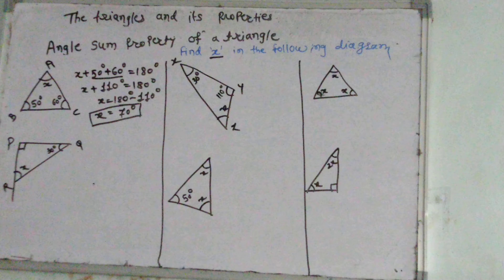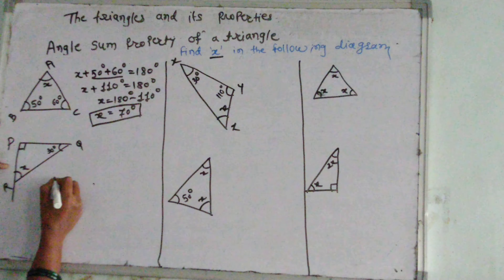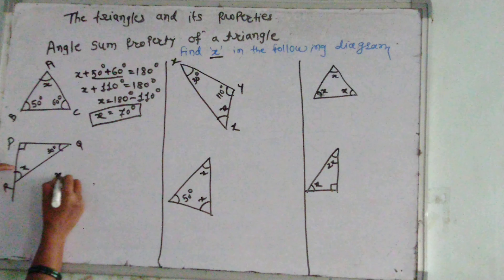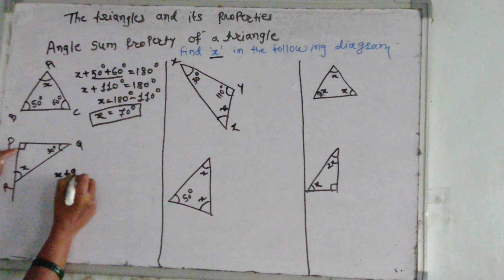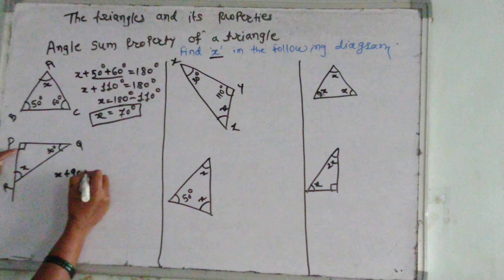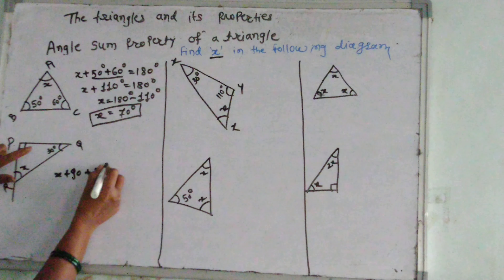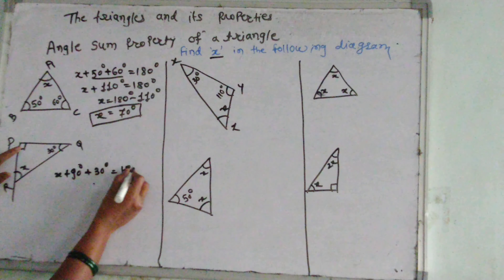Angle sum property of a triangle. Find X in the following diagram. ABC is a triangle. Now find the value of X.